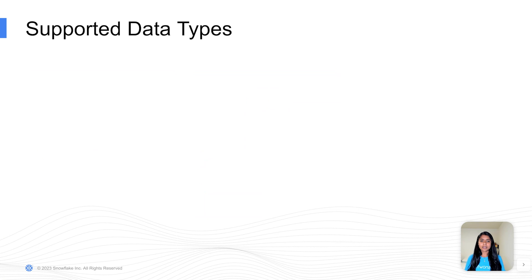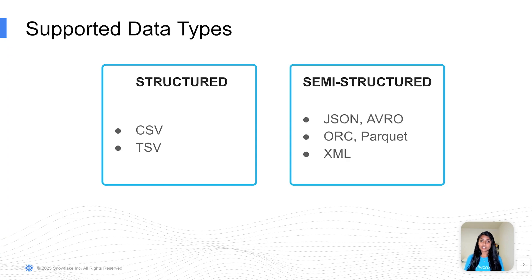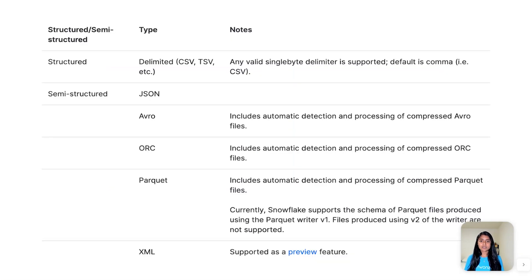Snowpipe supports structured data types such as CSV and TSV files, and semi-structured data types such as JSON, Avro, ORC, and Parquet. XML support is in preview.